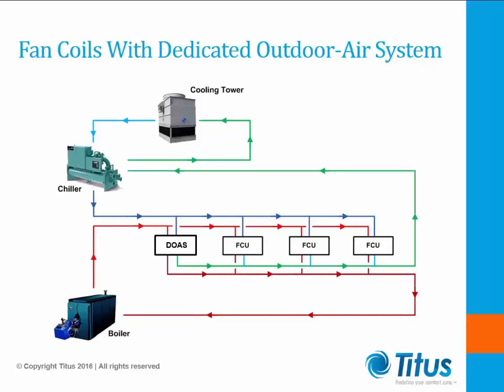In a system with a dedicated outdoor air unit, the ventilation air is treated in a centralized location. The latent and moisture from the outside air is removed. The conditioned air for ventilation and pressurization is distributed to the space. Positive pressurization from a balanced outside air and exhaust system helps minimize infiltration and associated localized loads. With the removal of the ventilation and infiltration loads from the occupied space, the room fan coils and piping can be reduced in size.